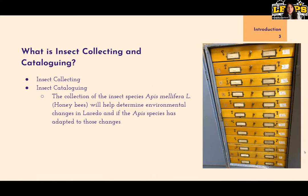What is insect collecting and cataloging? Insect collecting refers to the collection of insects for scientific purposes. Insect cataloging serves as a reference for identification in insects, and therefore helps provide information on the challenges and changes in the same species. The collection of the insect species Apis mellifera will help determine environmental changes in Laredo and if the Apis species has adapted to those changes. The photo on the right is the collection boxes located at Laredo College that hopefully hold honeybees collected in previous years.